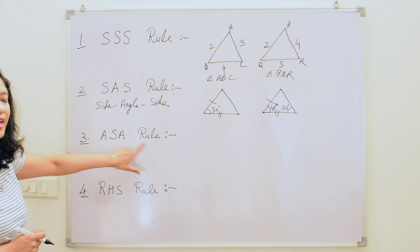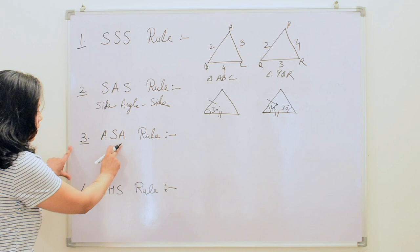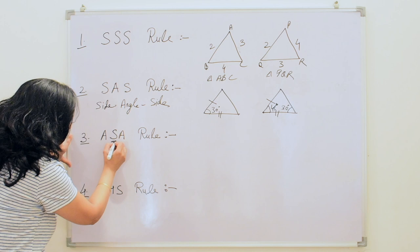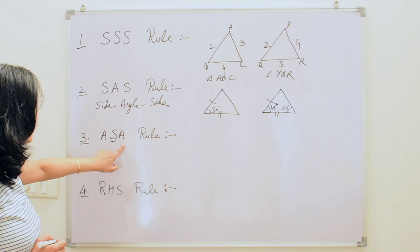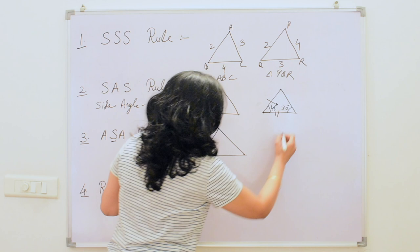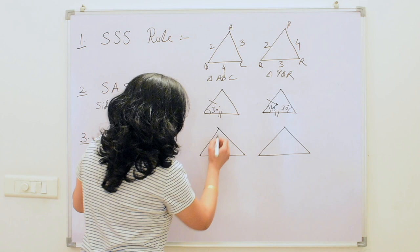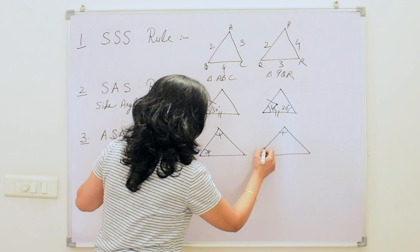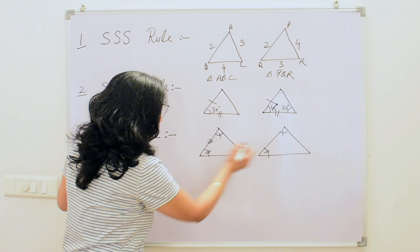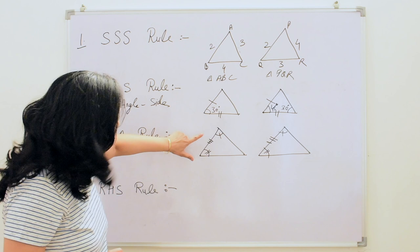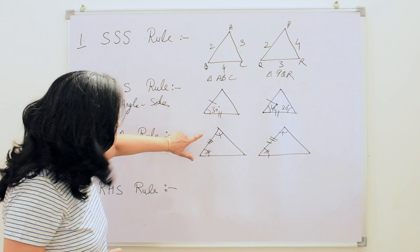Next is the ASA rule — ASA means angle-side-angle. Two angles and the side included between them must be equal to the corresponding two angles and included side of the other triangle. If these two corresponding angles are equal and the side included between them is also equal to the corresponding included side of the other triangle, then by ASA congruency the two triangles are congruent.